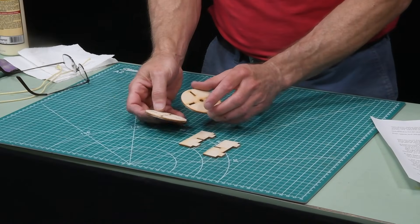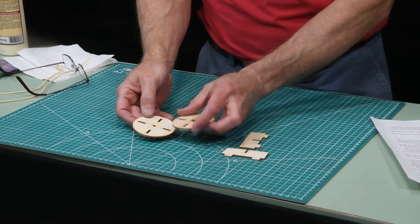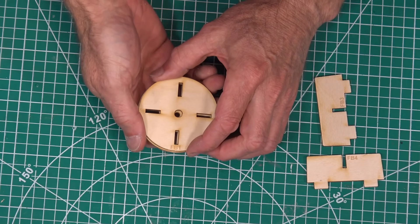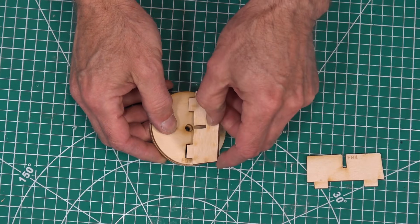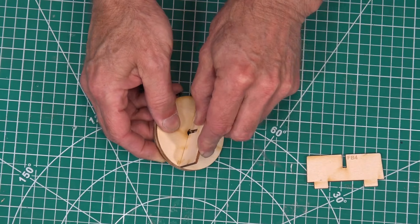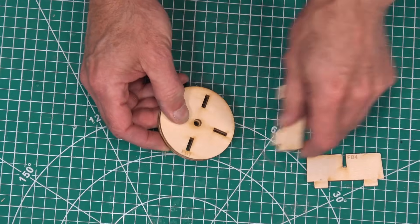First, we're going to glue FB1 and FB2 together. They're going to go like that, and we need to align those holes. We're going to use one of these to hold it in place while the glue is drying.